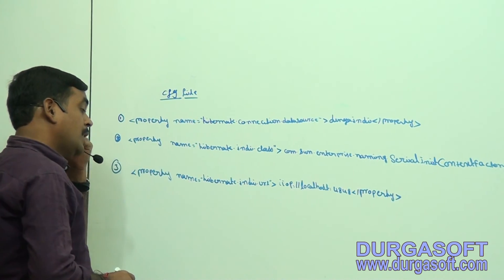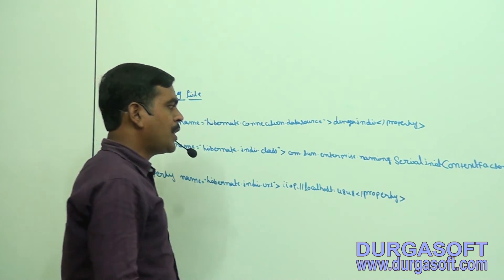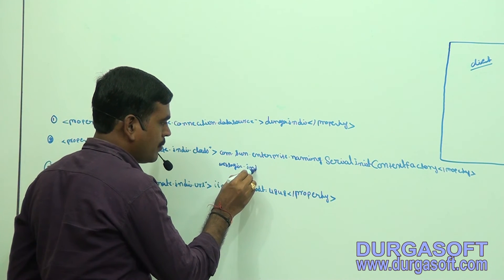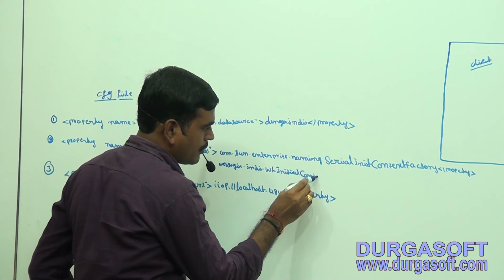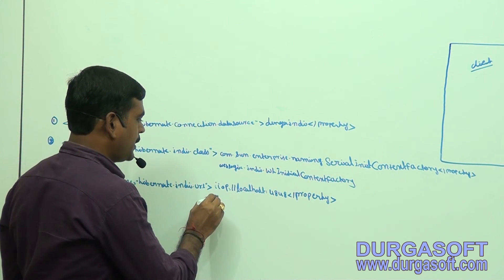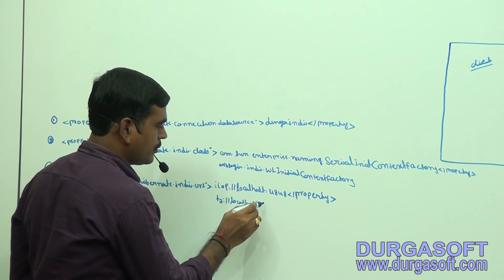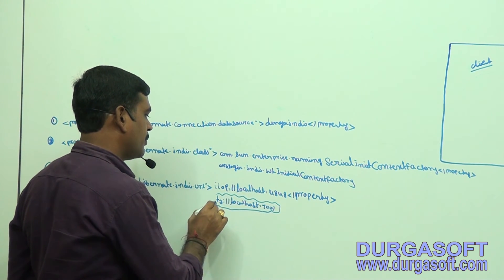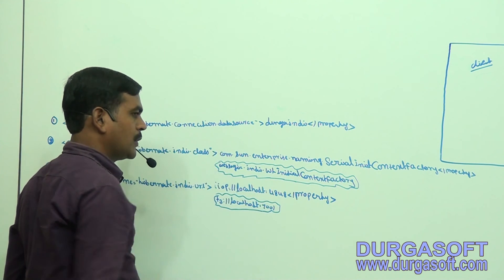If it is a WebLogic server, the JNDI properties are going to change. For WebLogic, the JNDI class is weblogic.jndi.WLInitialContextFactory, and the URL is t3://localhost:7001, which is the default port number of the WebLogic server.